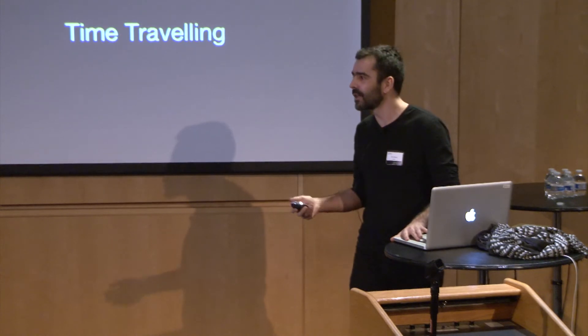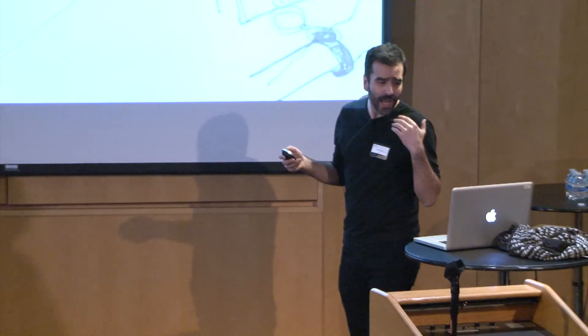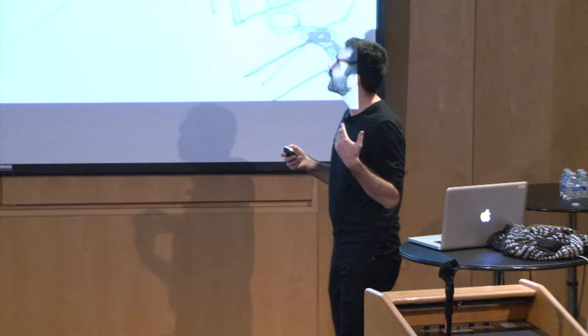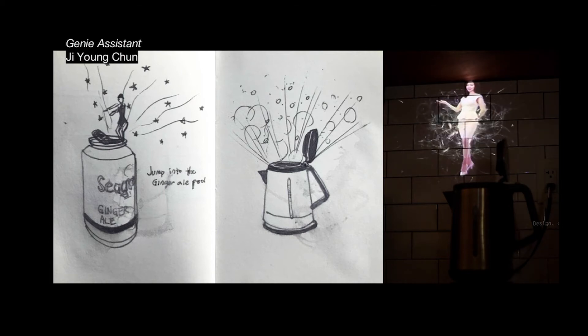Please bear in mind these are prototypes — one week long, sometimes two week long prototypes, but they did a great job. On assistance: I like to bring the genie assistant and how Ji Young created this really interesting assistant living on a wearable that can help you understand context. When it understands your physical space and has access to it, it can jump from your wearable into the physical space and be contextual and relevant to the actions you need.